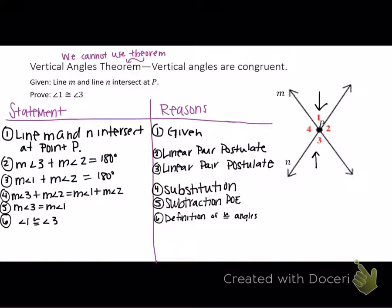So the first thing we did is ask: are there words to define in the given? And the answer was no. So then you go to the diagram. Both of those pieces of information came from the diagram — not something given to you. Then we used substitution from steps two and three, because they both equal 180. And then I think the rest is pretty self-explanatory. Mariah asked: since it says measure of angle three equals measure of angle one, wouldn't you use the symmetric property? You probably should have, but it's not a huge deal. You could add a step six saying measure of angle one equals measure of angle three by symmetric property, and then use the definition of congruent angles.